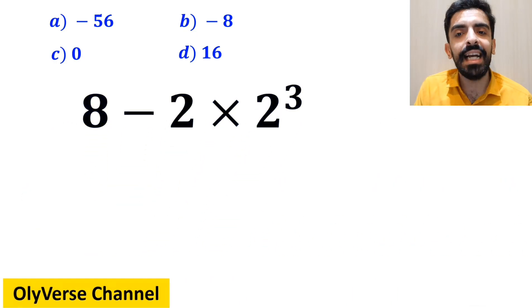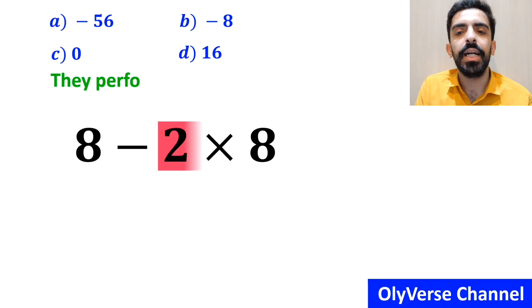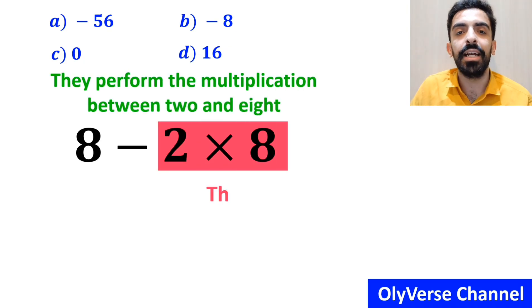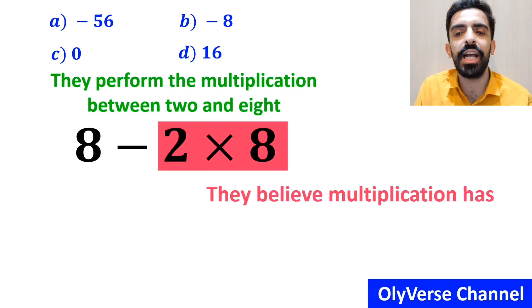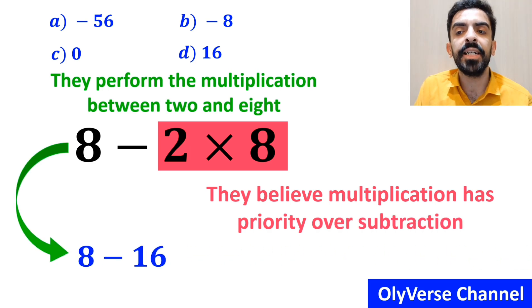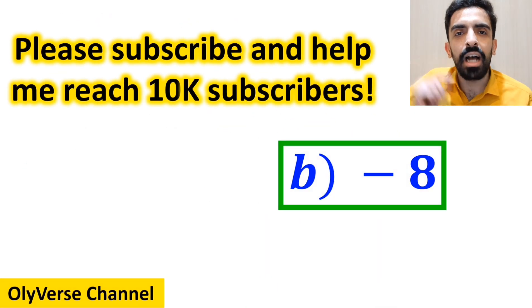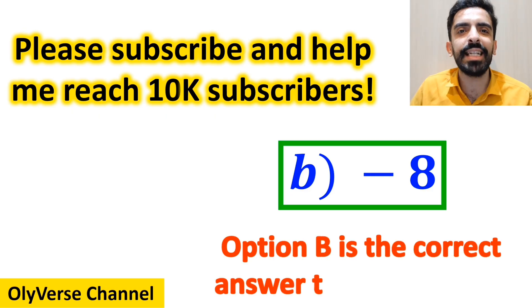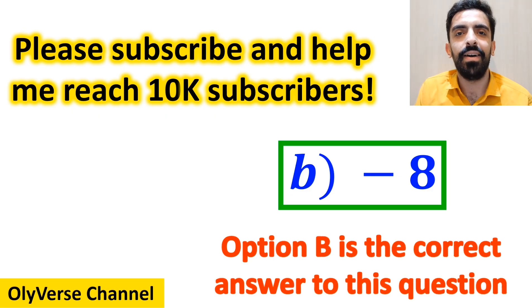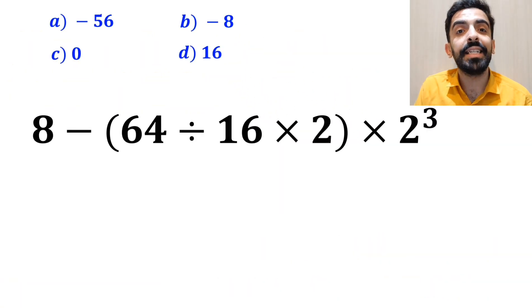In the final step they perform the multiplication between 2 and 8 because they believe multiplication has priority over subtraction, so they rewrite this expression as 8 minus 16, which ultimately gives them the answer negative 8. Then they quickly say that option B is the correct answer — however, this answer is absolutely wrong.